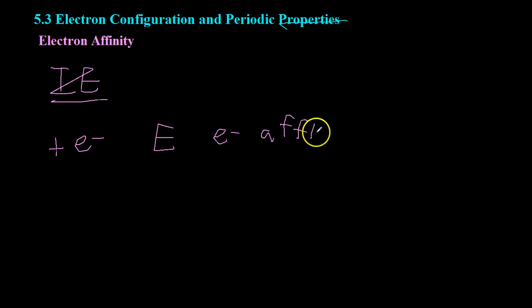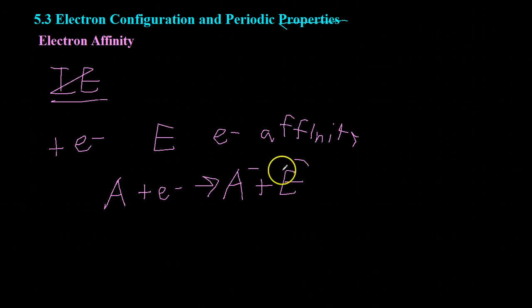Now I'll give you an example that's just a general equation for electron affinity. So you take an atom, you add an electron, and what you end up with is a negative ion and energy. And this energy is always expressed as negative energy, because by convention, energy is measured as energy put into the system.